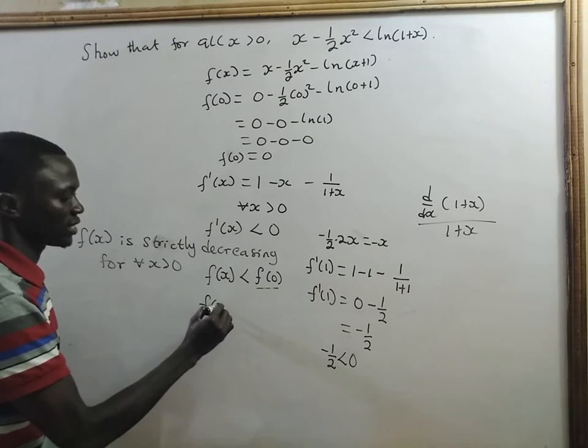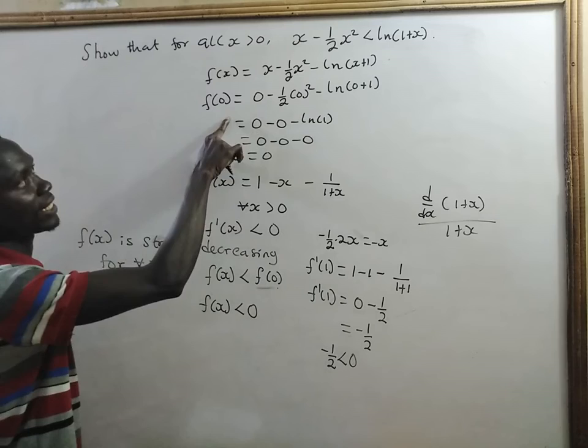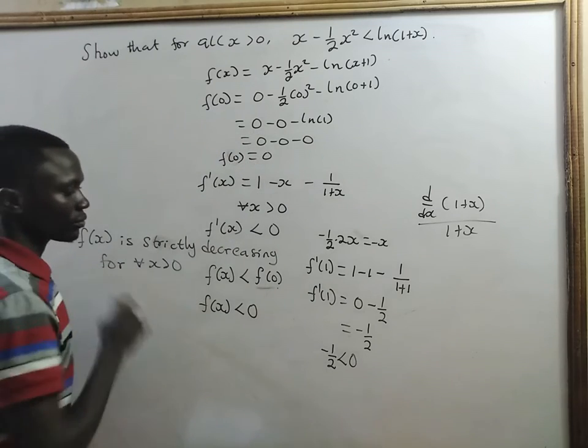So, our f(x) is always less than 0. That is, f(0). So, f(0), the answer is 0.